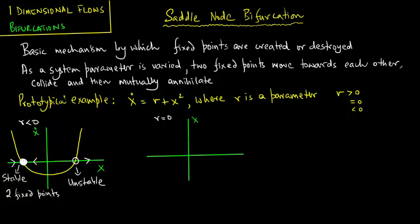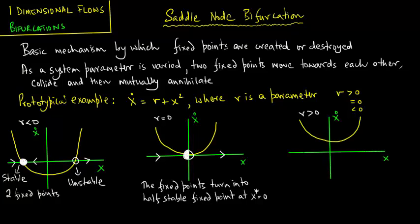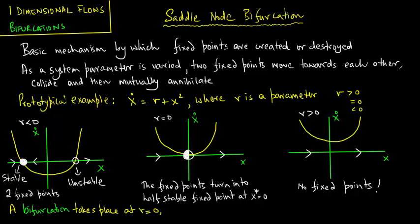For r equal to 0, plotting x-dot versus x reveals only one fixed point. That fixed point is attracting from the left and repelling from the right, making it a half-stable fixed point at x* = 0. When r is greater than 0, there are no fixed points. A bifurcation effectively takes place at r = 0, as the vector fields for r > 0 and r < 0 are qualitatively different from each other.